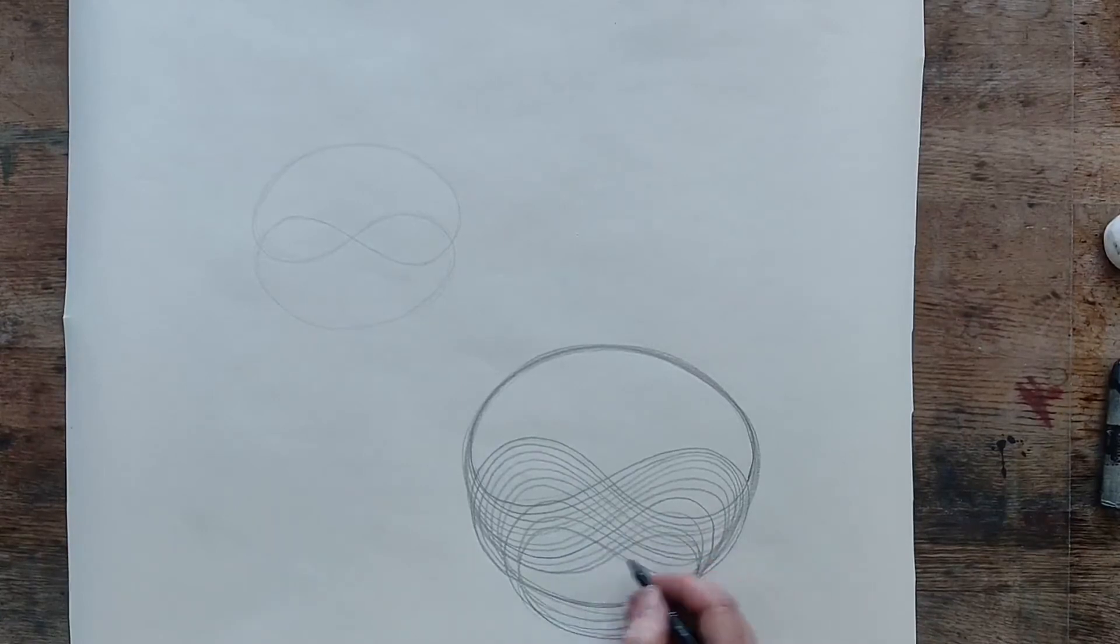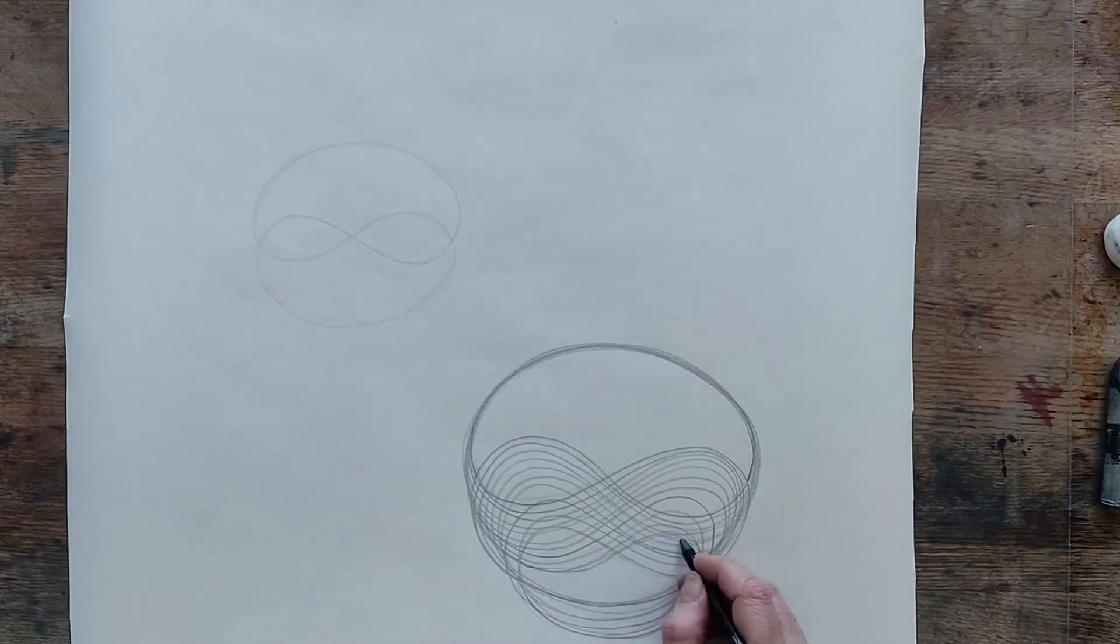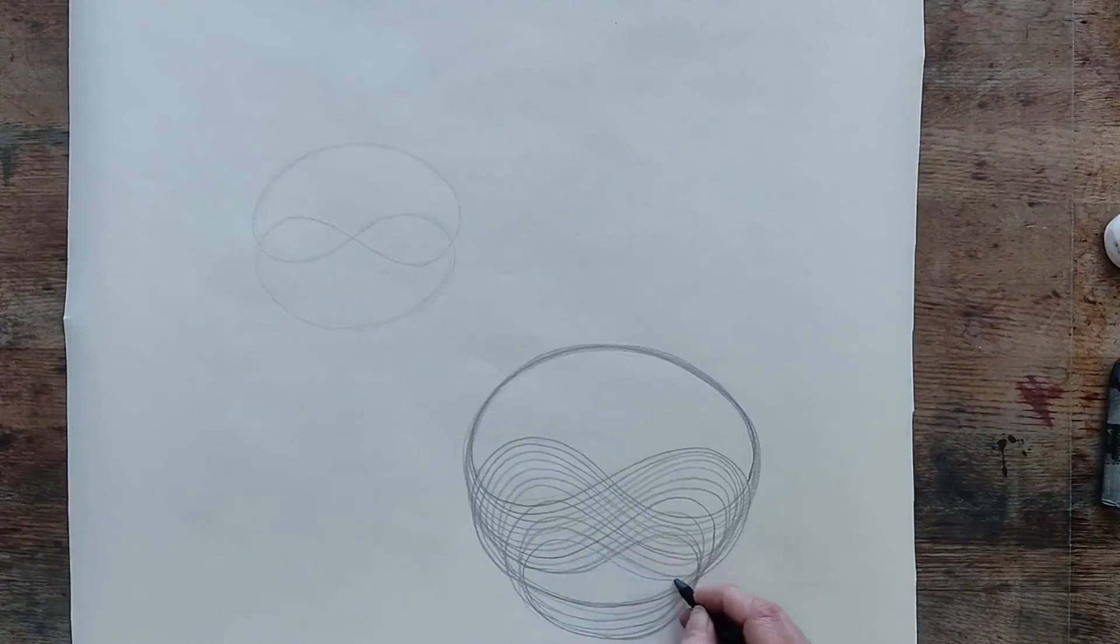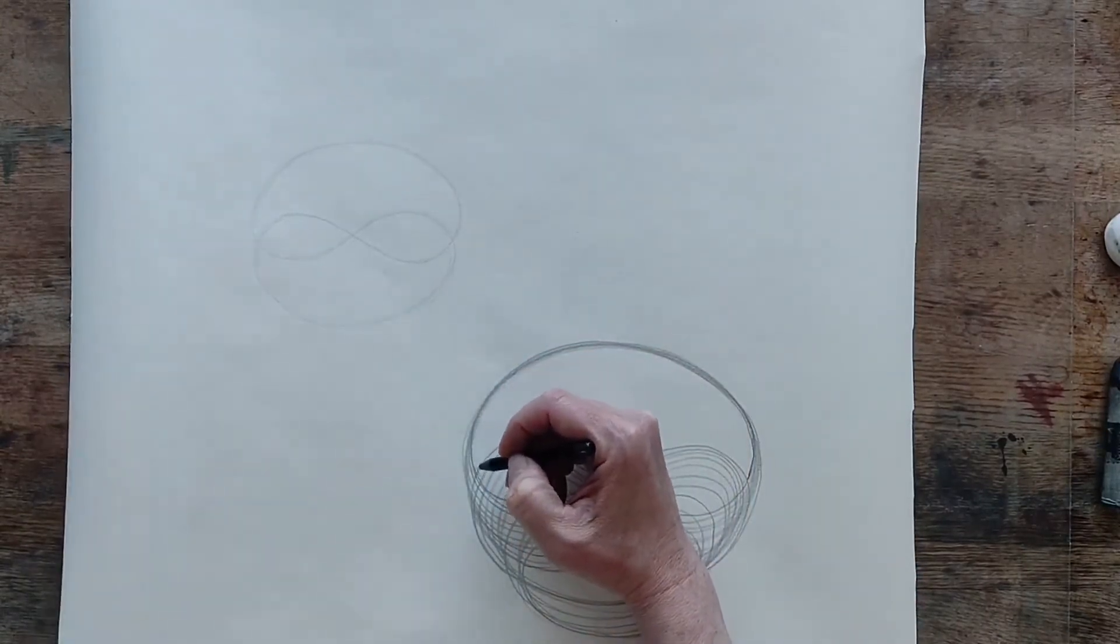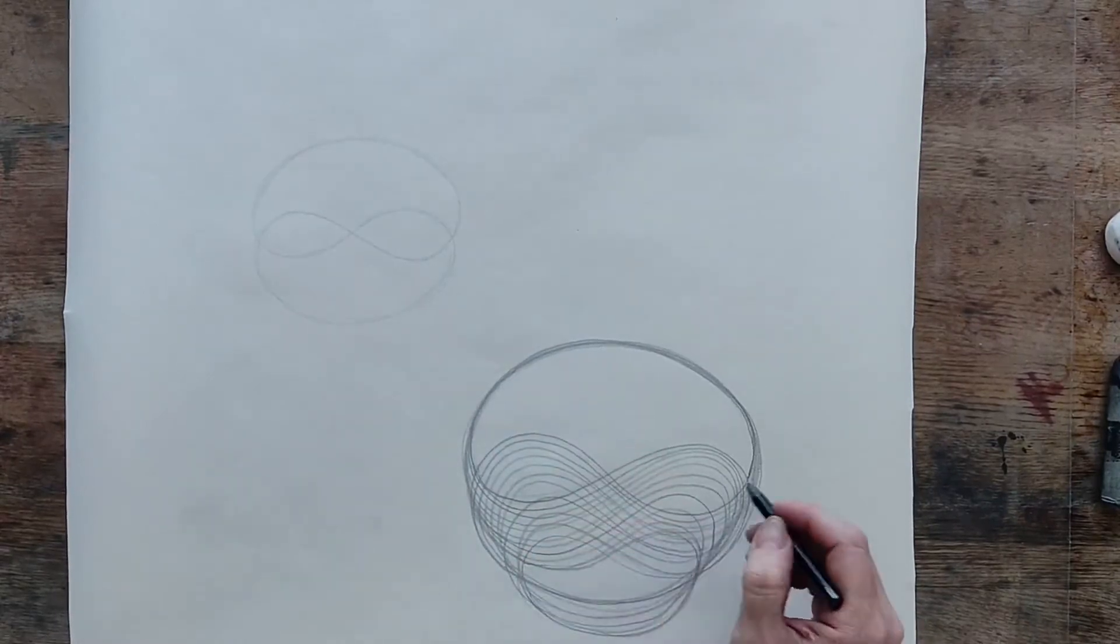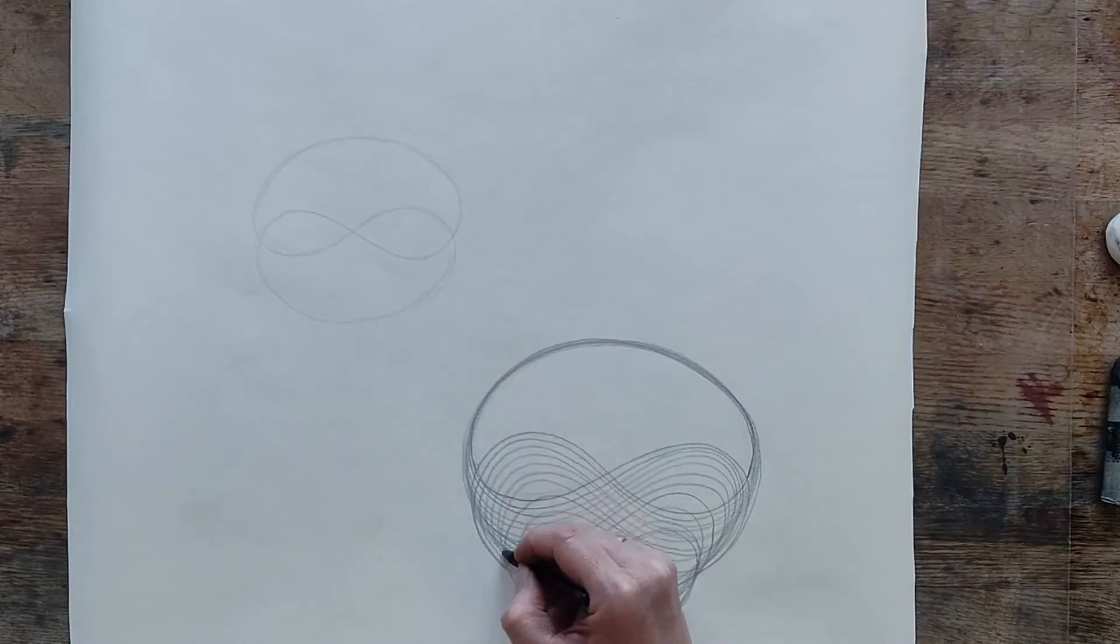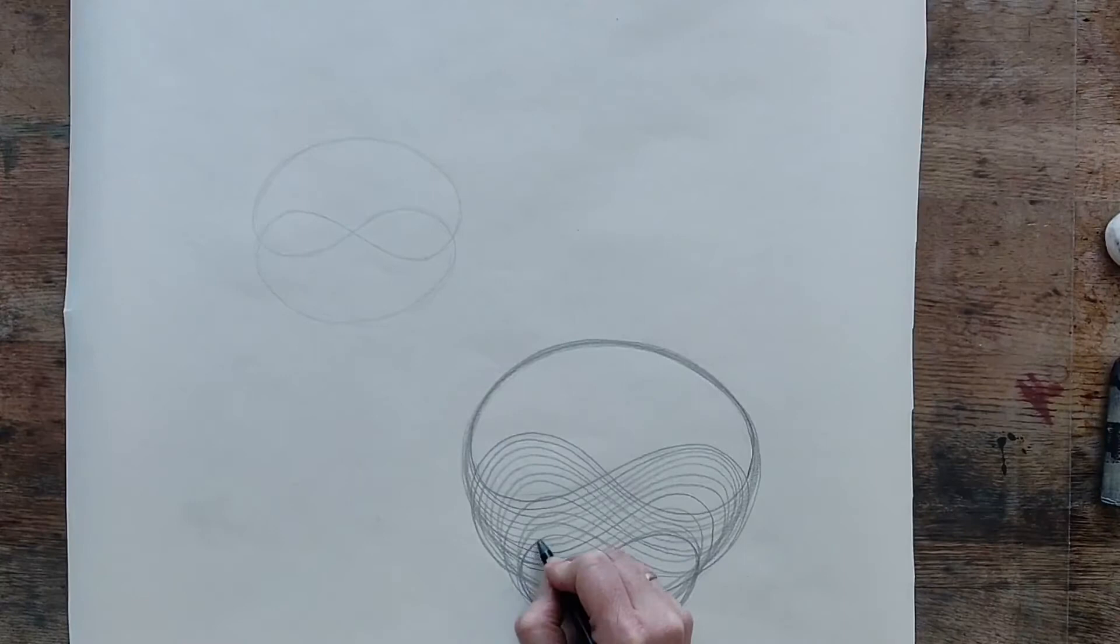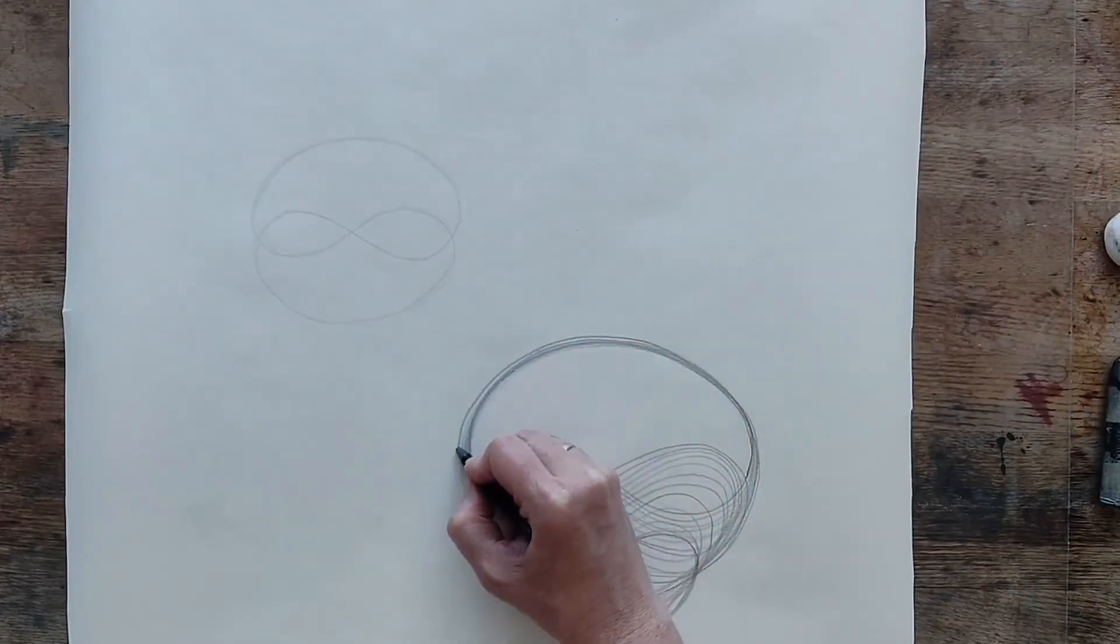So we can continue or we can stop here. So basically, you can make it as small as you want to really. What you want to do, though, I'm coming undone down here with my tape. So what you want to do, though, is you want to maintain this big curve here.